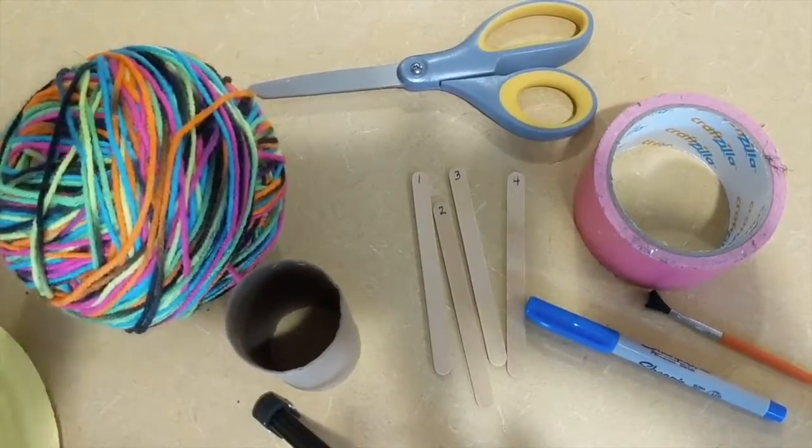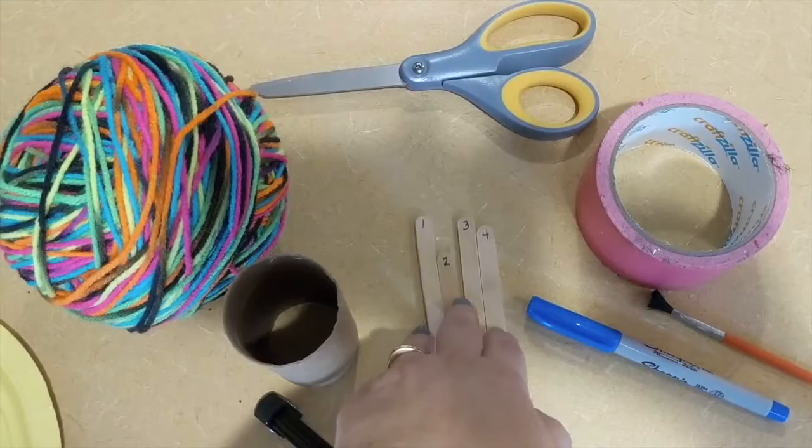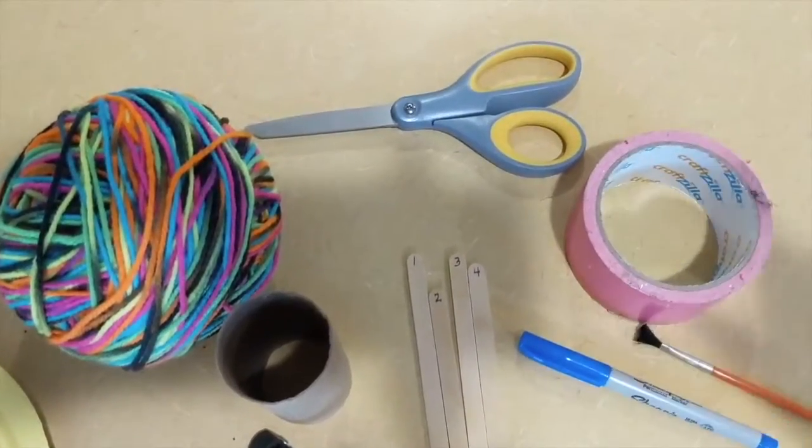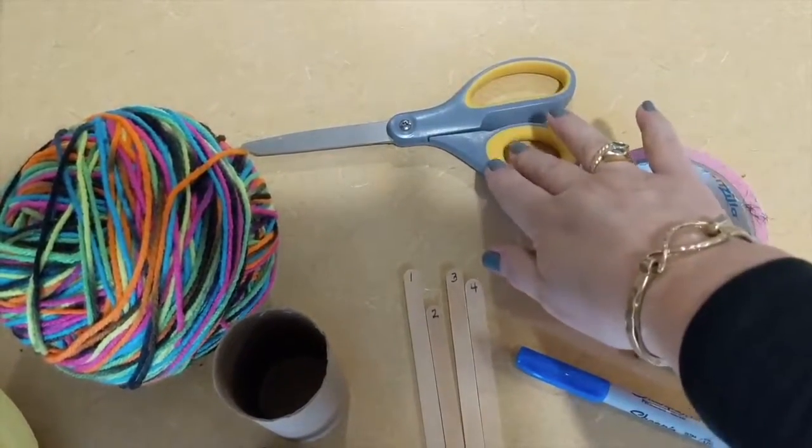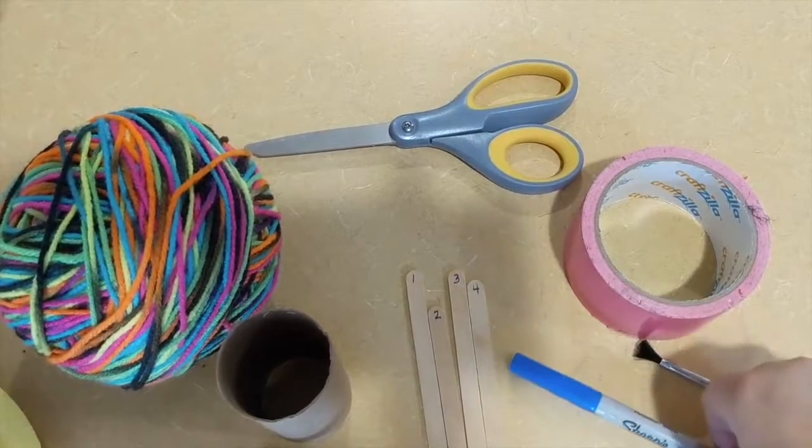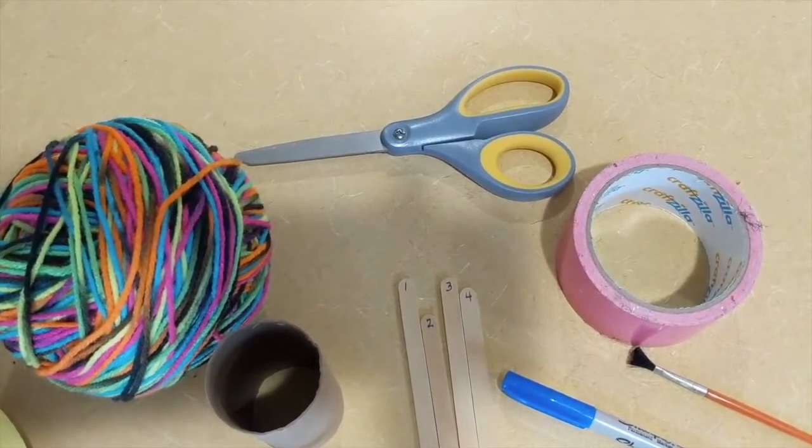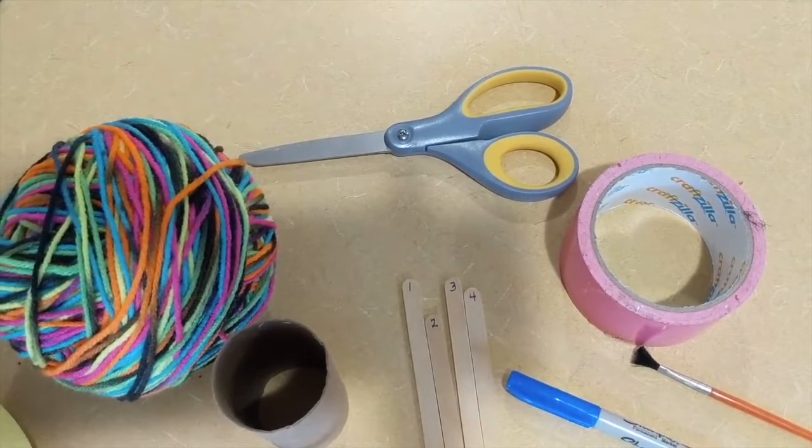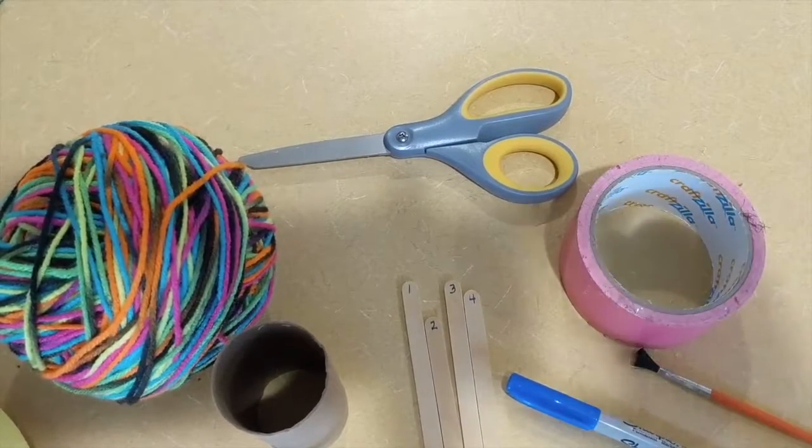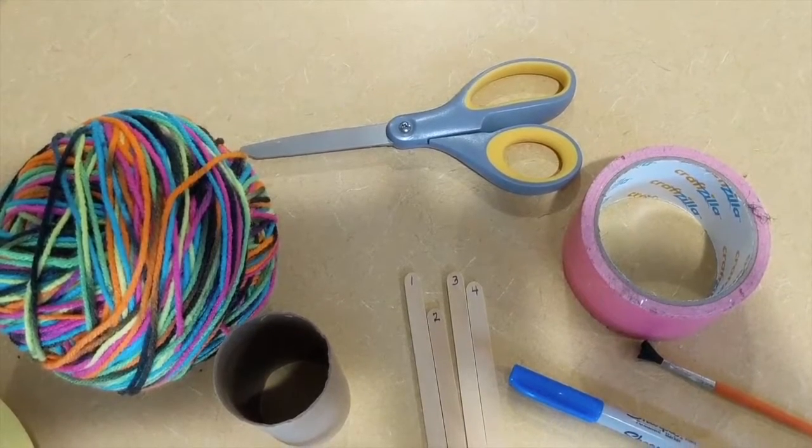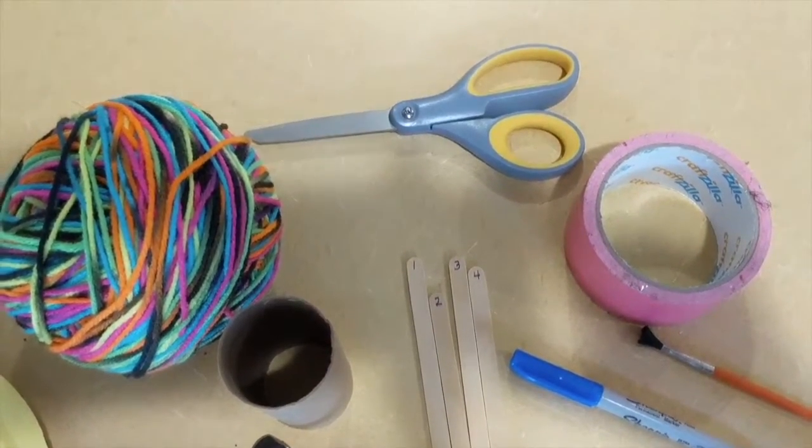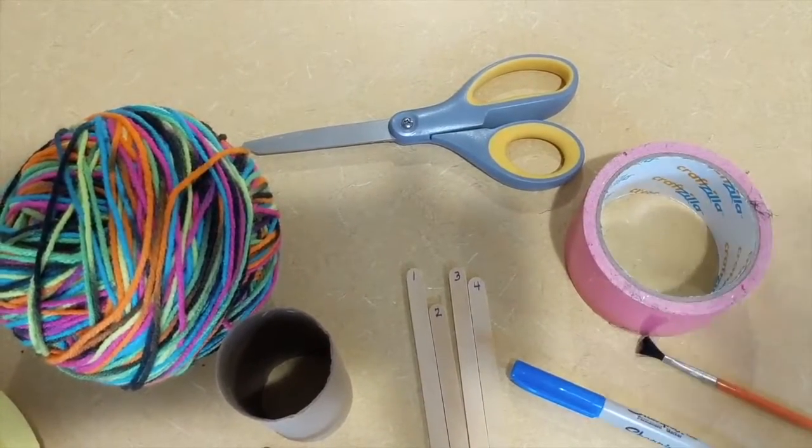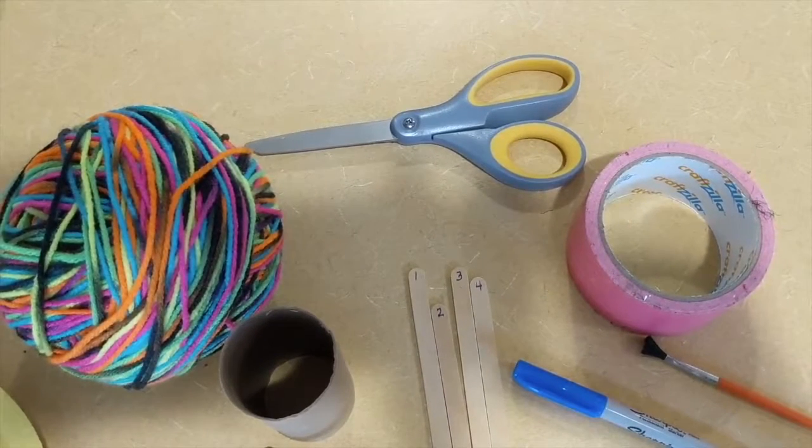You have your popsicle sticks. You should have on hand a pair of scissors, a marker, and I asked you to either have duct tape, masking tape, something to wrap around the tube to make it a little more sturdy. But whatever you have will be just fine. If you have nothing, it'll be fine too. It might just be you might just have to be a little bit more careful.